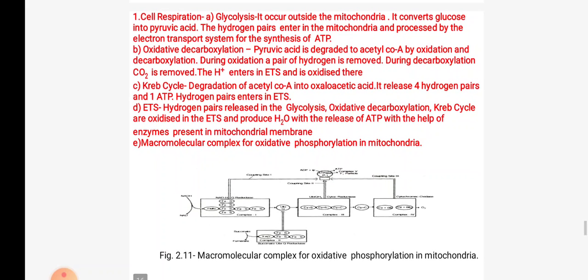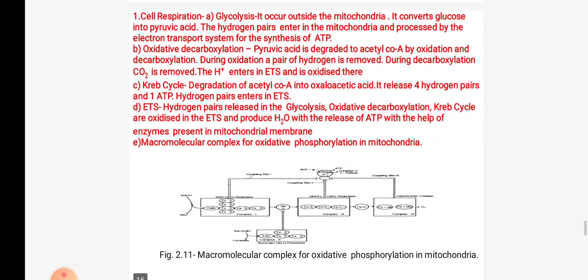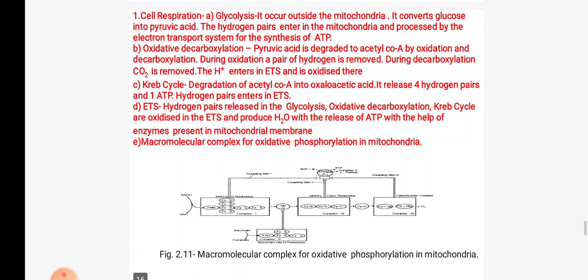Mitochondria play a very important role in cell respiration. In glycolysis, which occurs outside the mitochondria, glucose is converted into pyruvic acid. The hydrogen pairs enter the mitochondria and are processed by the electron transport system for the synthesis of ATP. In oxidative decarboxylation, pyruvic acid is degraded to acetyl coenzyme A by oxidation and decarboxylation; hydrogen is removed during this process, and CO2 is removed during decarboxylation. The hydrogen enters the ETS and is oxidized there.